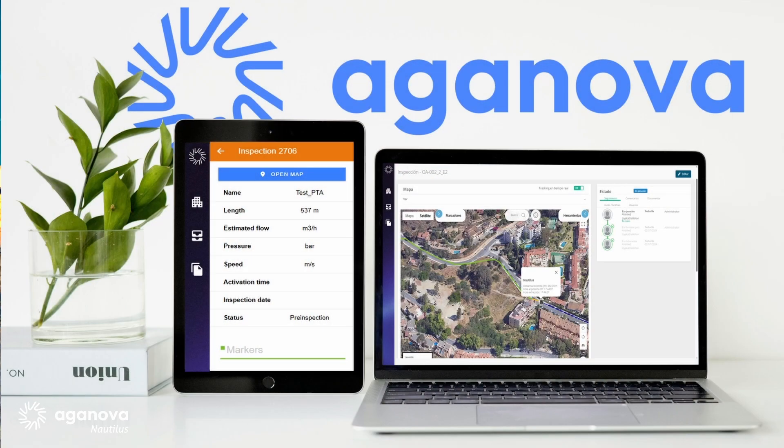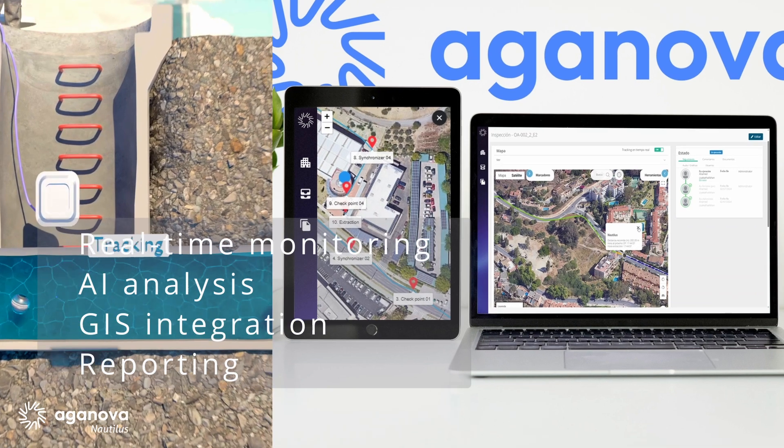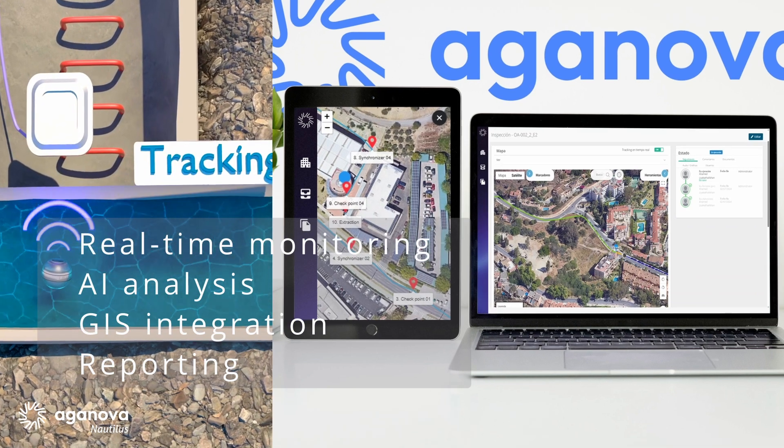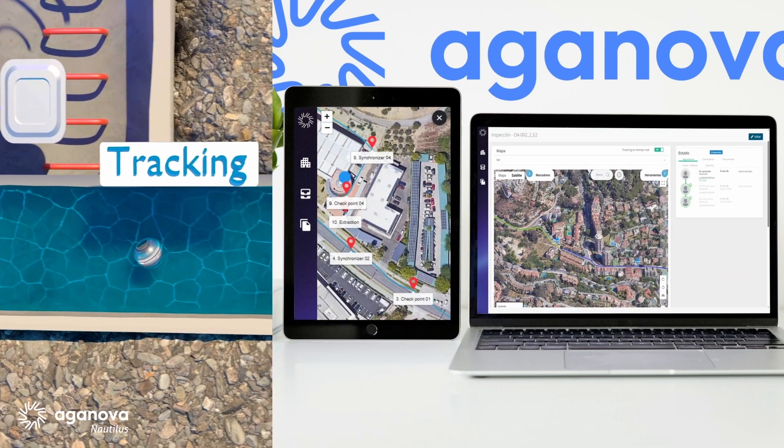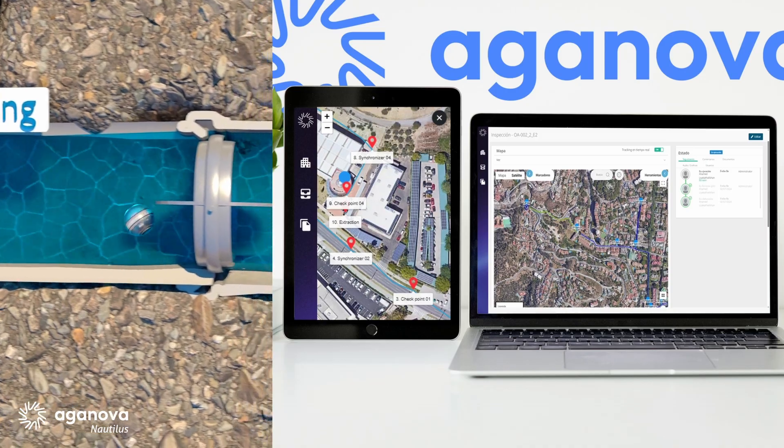Nautilus collects real-time data, which is analyzed in NEMO, a digital platform powered by artificial intelligence to support informed decision-making.